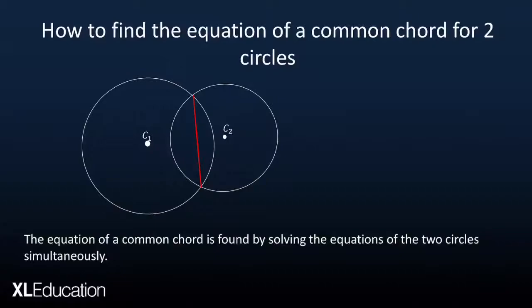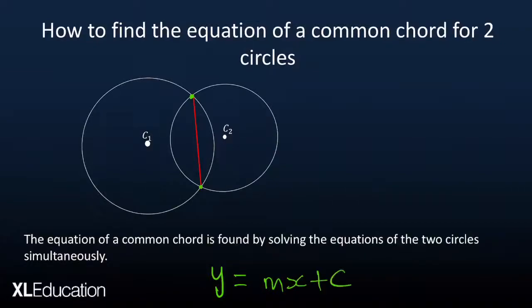There is also a situation where you need to find the equation of a common chord of two circles that are cutting each other at two distinct points. You join the two intersection points to get the chord the circles share. To find it, you solve the equations of the two circles simultaneously, and the result will be a linear equation — a straight line of the form y = mx + c.